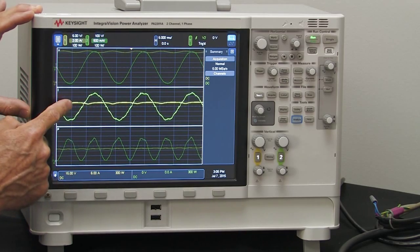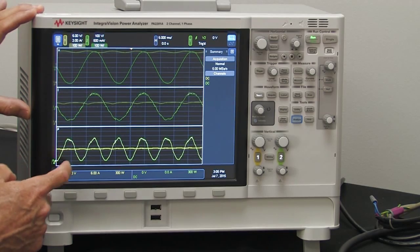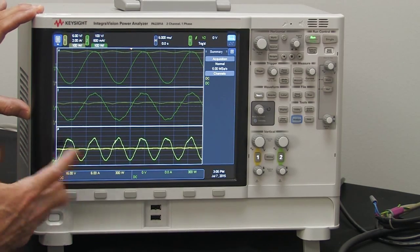The second section here is the current, both the input and the output, and the bottom is the power, both the input and the output in watts.